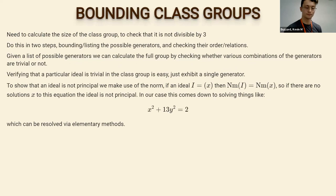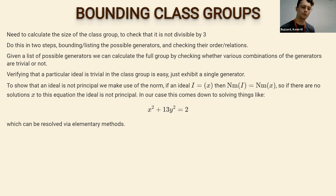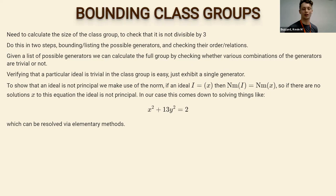We list the possible generators of the class group and check their order or relations. Checking whether an ideal is trivial in the class group has some difficulty, but showing a particular ideal is principal is fairly easy — you just find a generator and verify everything in the ideal is generated by it. That's still doable, if it requires some manual labor.